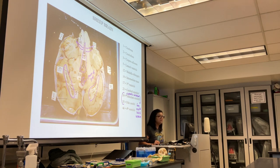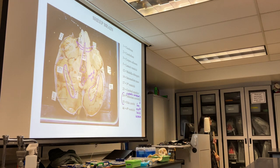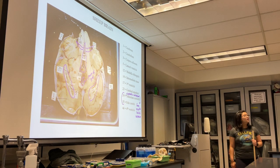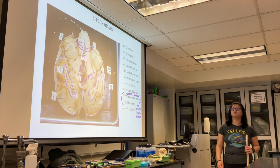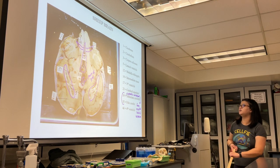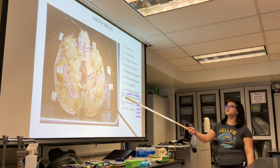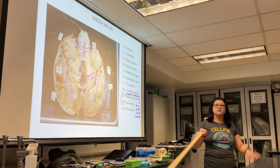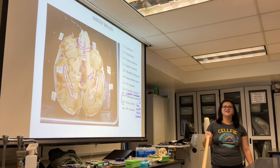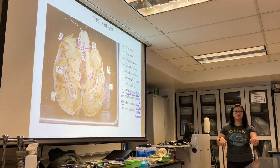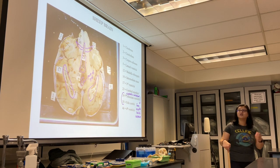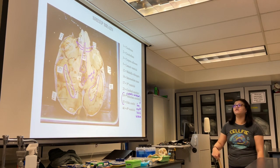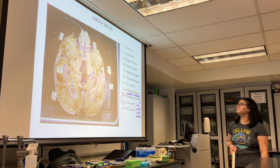I'm not going to test you on the sheep brain, but let's look at the structures. We study sheep brains because they're very similar to ours. You can see the cerebrum, the cerebellum, and the arbor vitae — the white matter of the cerebellum — which here looks like a tree.